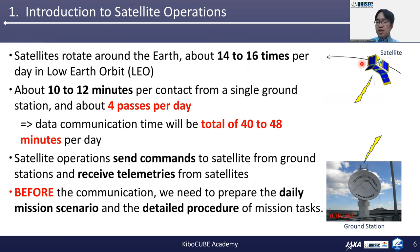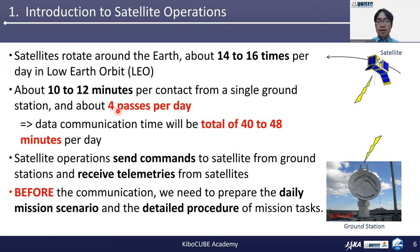This figure shows a satellite transmitting radio signals and the ground station transmitting signals to a satellite. The satellite rotates around the earth about 14 to 16 times per day in low earth orbit — we call it LEO. A single ground station has a contact period of about 10 to 12 minutes, and about four passes are available per day. Please imagine a satellite will come from the horizon, pass over your ground station, and disappear into the horizon. Therefore, data communication time will be a total of 40 to 48 minutes per day.